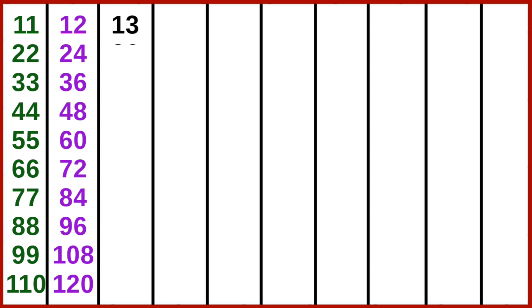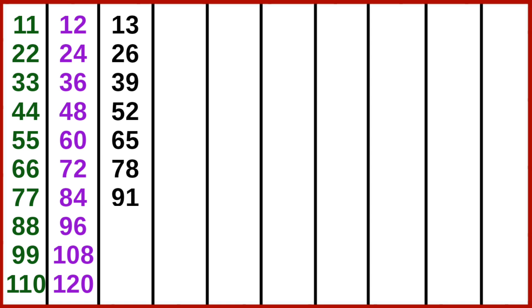13 ones are 13, 13 twos are 26, 13 threes are 39, 13 fours are 52, 13 fives are 65, 13 sixes are 78, 13 sevens are 91, 13 eights are 104, 13 nines are 117, 13 tens are 130.